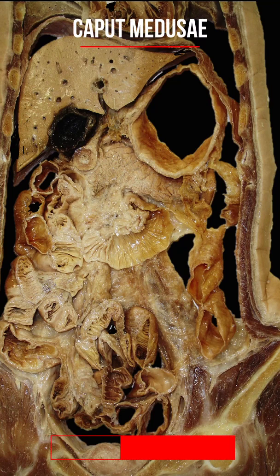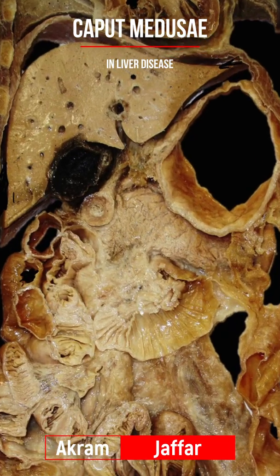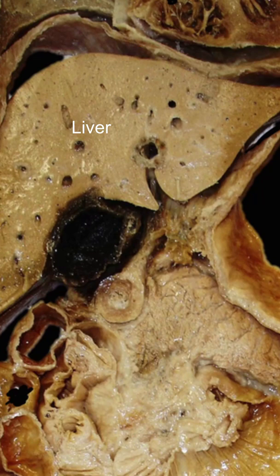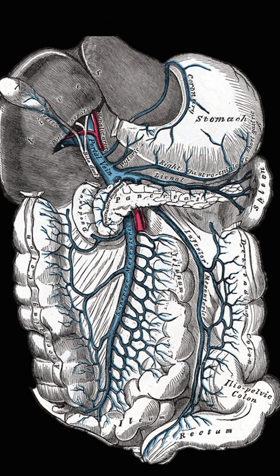Liver disease may cause narrowing of the branches of the portal vein within the liver, resulting in portal hypertension. Some blood reaching the liver would pass retrogradely in the portal vein tributaries, trying to reach the systemic circulation.